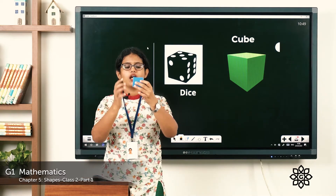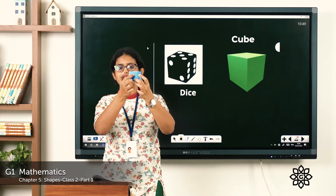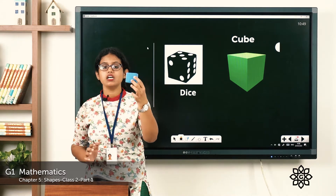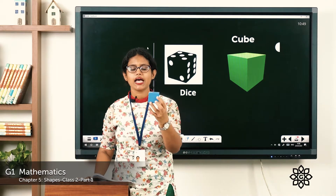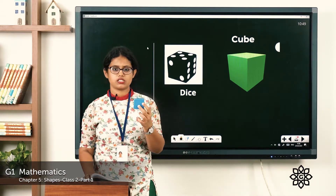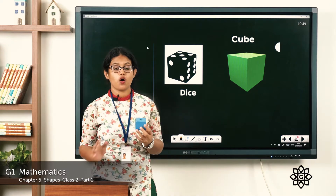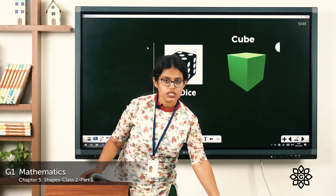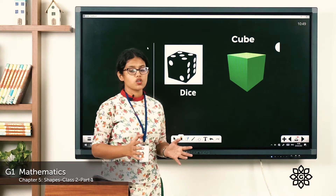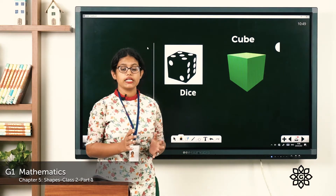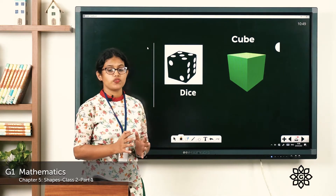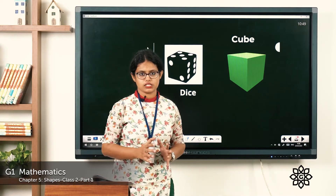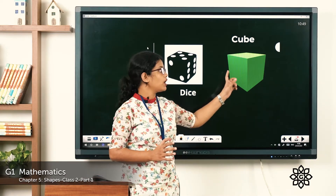So counting the faces: one, two, three, four, five, six. This is a cube and the cube has six faces. The 3D shape of a square is the cube. Have you seen a dice or a Rubik's cube? It is in the shape of a cube — a cubical shape with six faces. So that is about the shape cube.